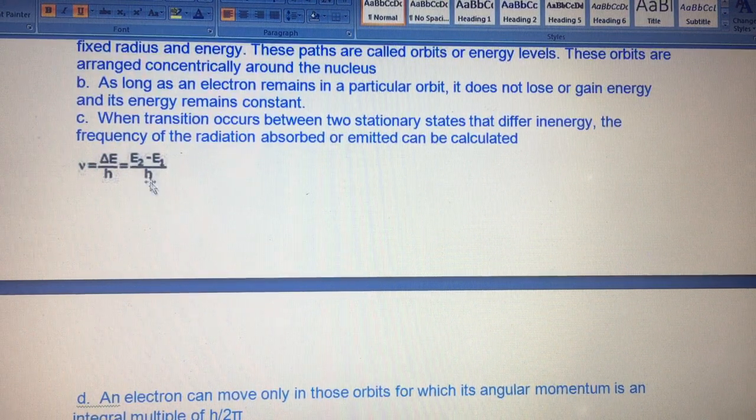When an electron remains in a particular orbit, it doesn't cross to another orbit. Whether in K or L, it neither loses nor gains energy, and energy remains the same. When transition occurs, energy changes and radiation is absorbed or emitted, which gives us the spectrum. If we use the formula E equals h nu to calculate frequency, we get E2 minus E1 upon h, where h is Planck's constant.